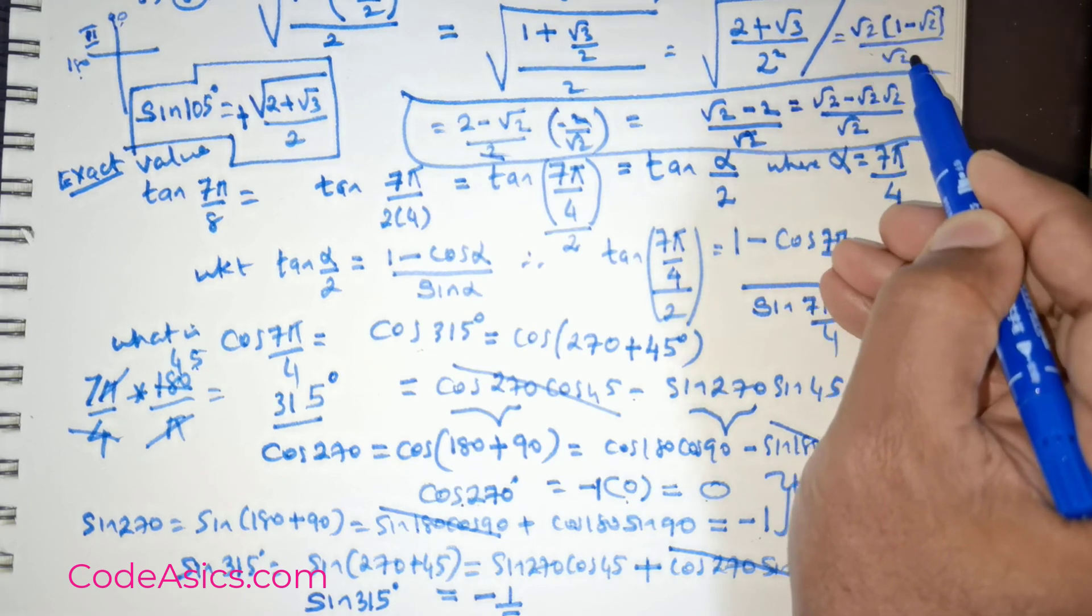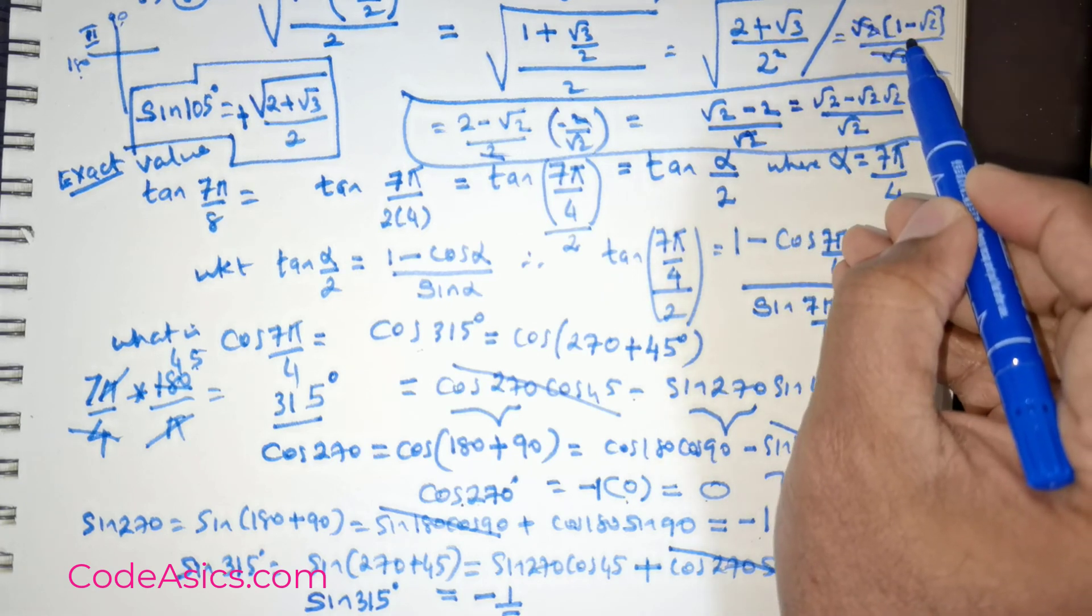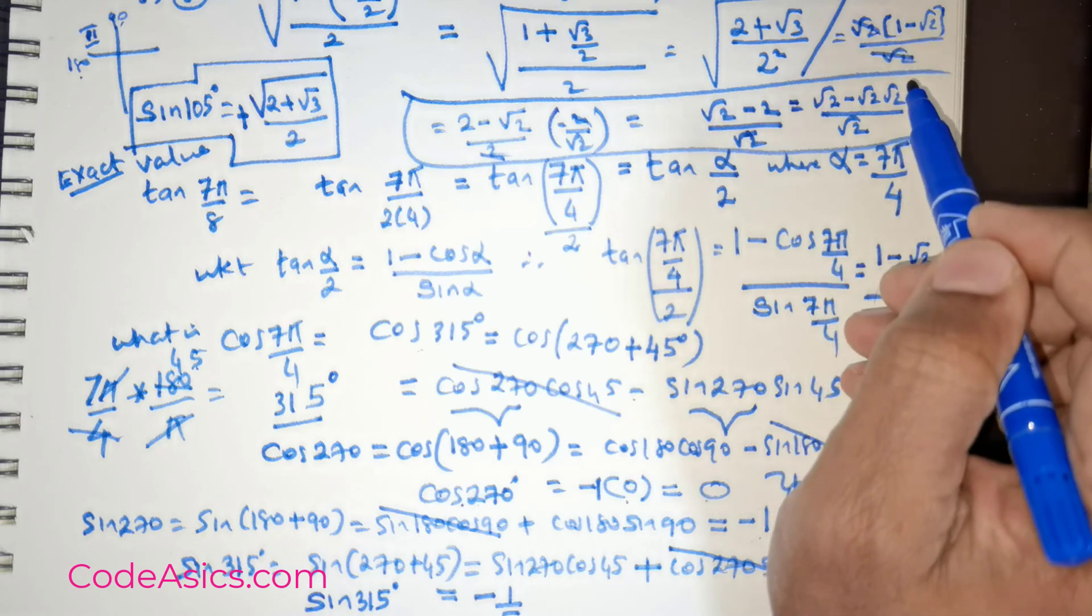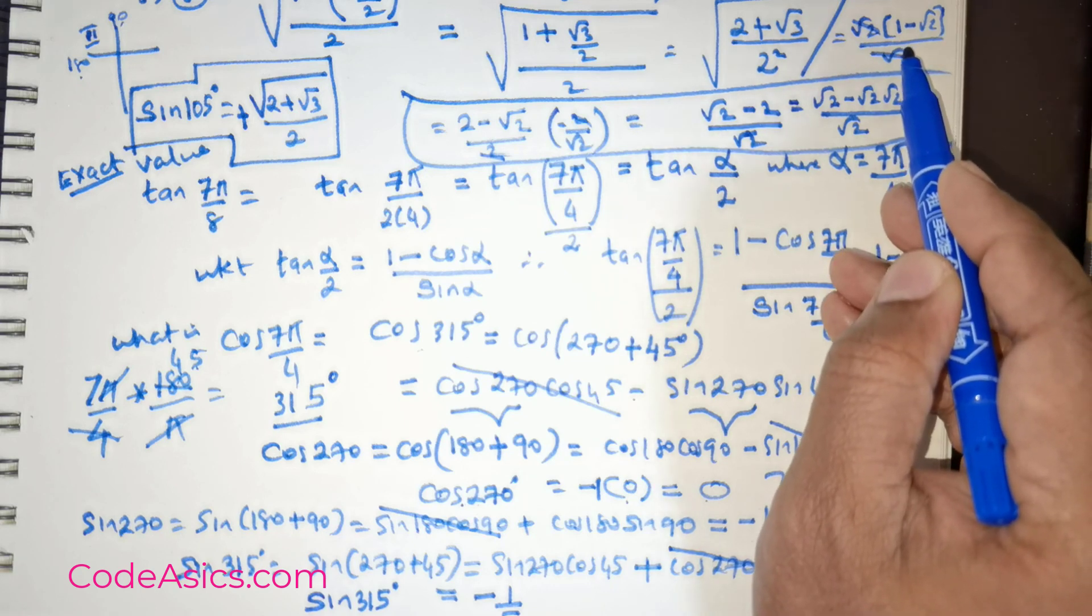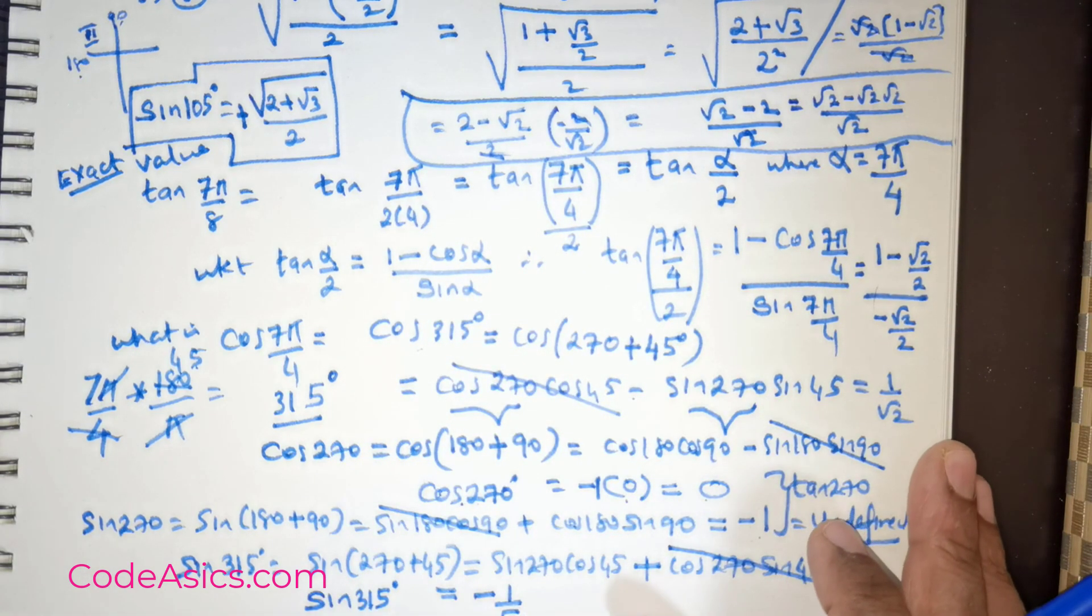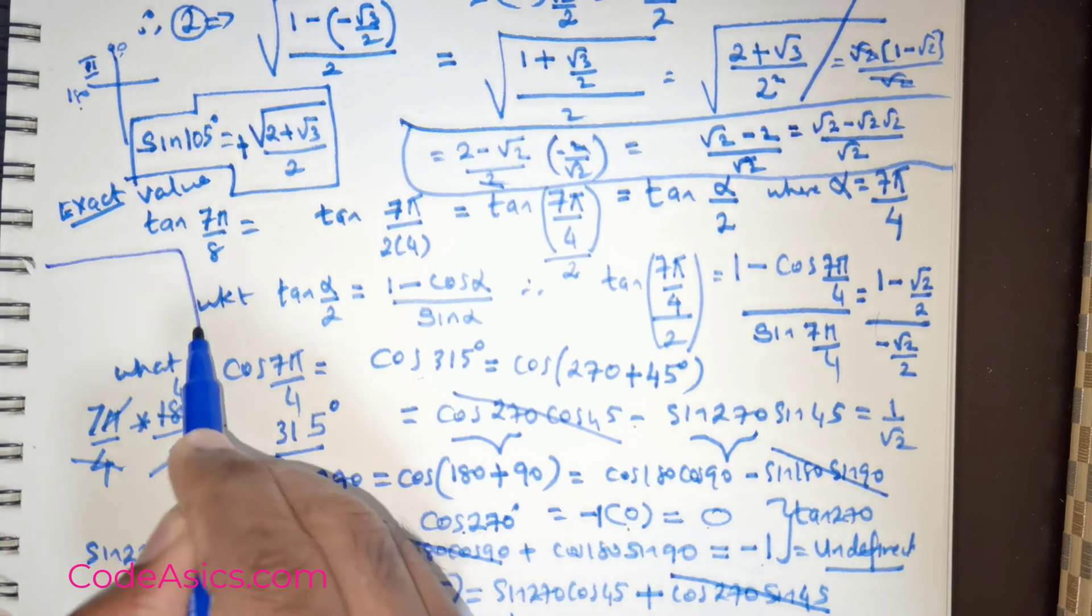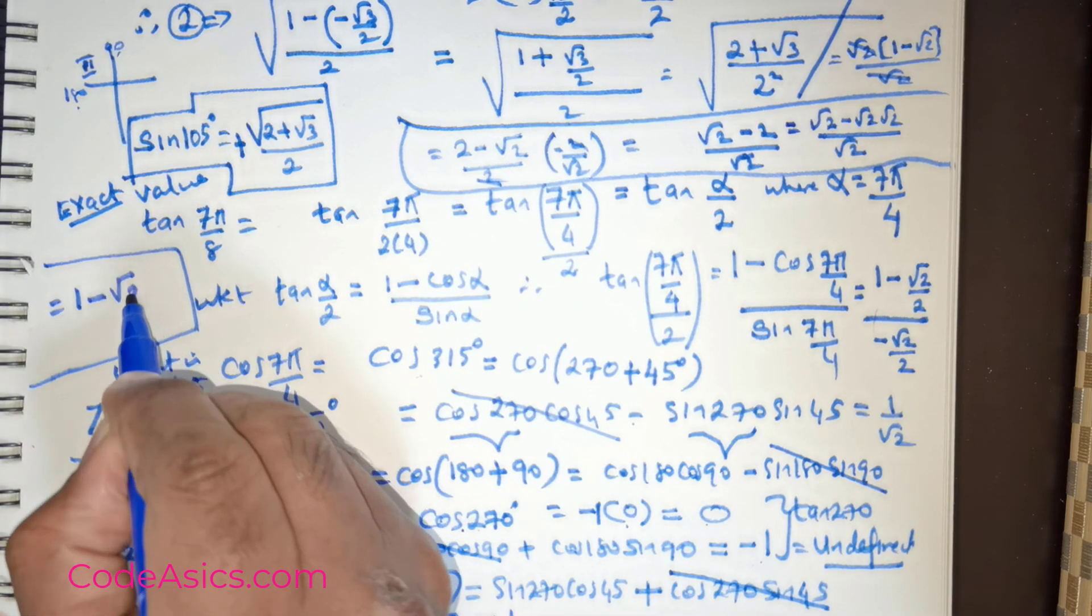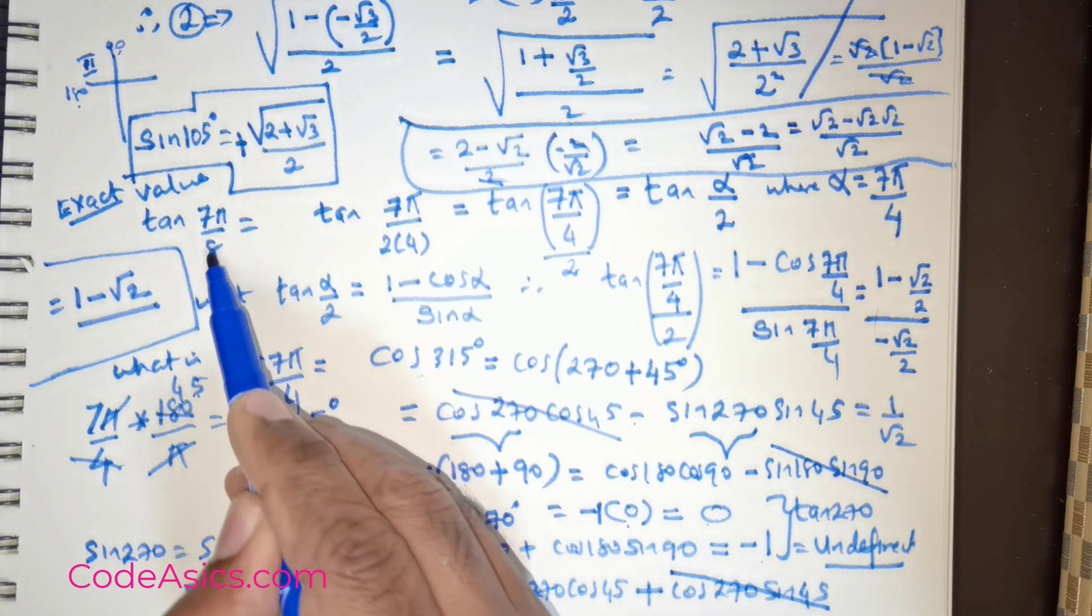So clearly root 2 root 2 gets cancelled, giving me a beautiful value of 1 minus root 2. Isn't it lovely? So the value that we have extracted is, the final solution is 1 minus root 2. That's the solution for tan 7π over 8.